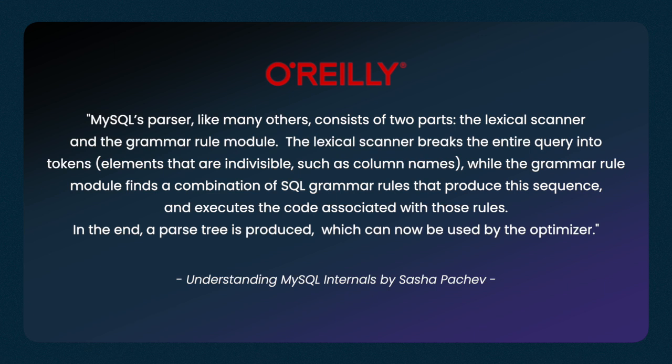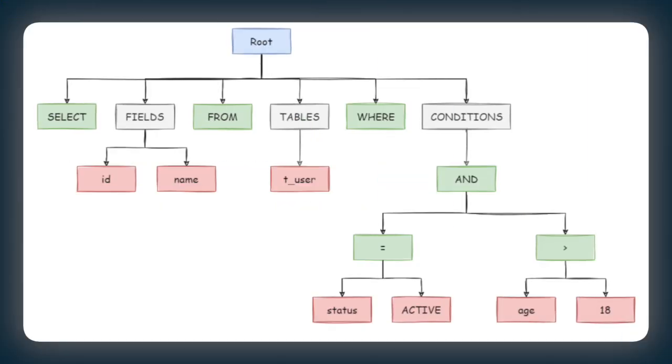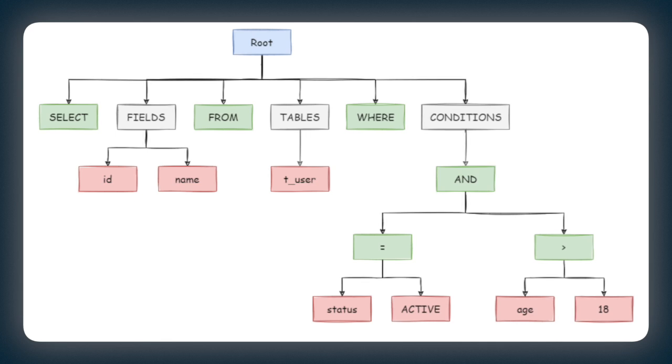So in terms of MySQL: the MySQL parser, like many others, consists of two parts — the lexical scanner and the grammar rule module. The lexical scanner breaks the entire query into tokens, elements that are indivisible such as column names, while the grammar rule module finds the combinations of SQL grammar rules that produce the sequence and executes the code associated with those rules. In the end, a parse tree is produced, which can now be used by the optimizer. You can see the parse tree breaks out the query into its various components — the SELECT, the FROM, the identifiers, etc.